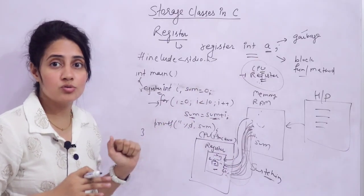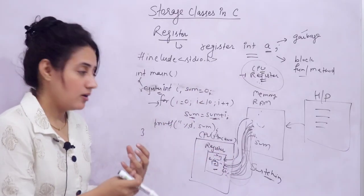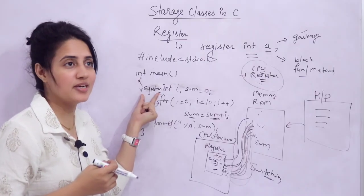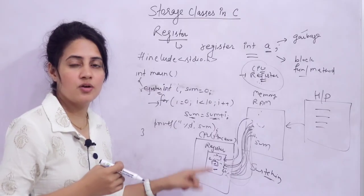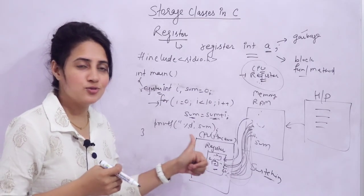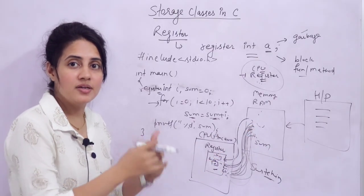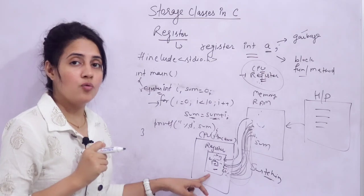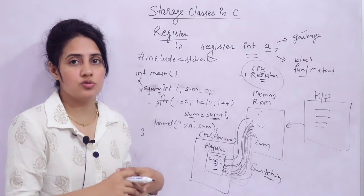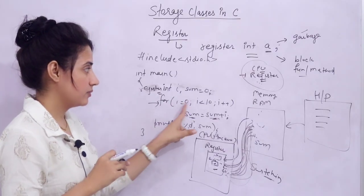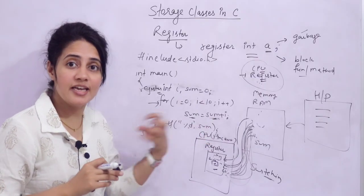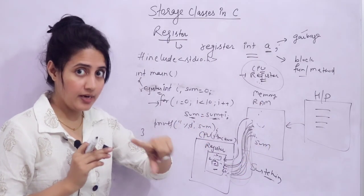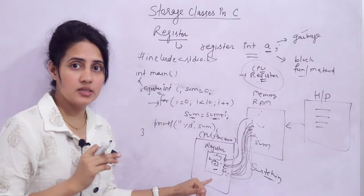Now you might say: for all variables, better to use register storage class for fast access. But it's not possible, because the size of CPU registers is very small — only in KBs. If we store all variables in registers, there would be no memory left for executing instructions. So we should only store frequently used variables — like counter variables and loop variables such as i and sum — in CPU registers.